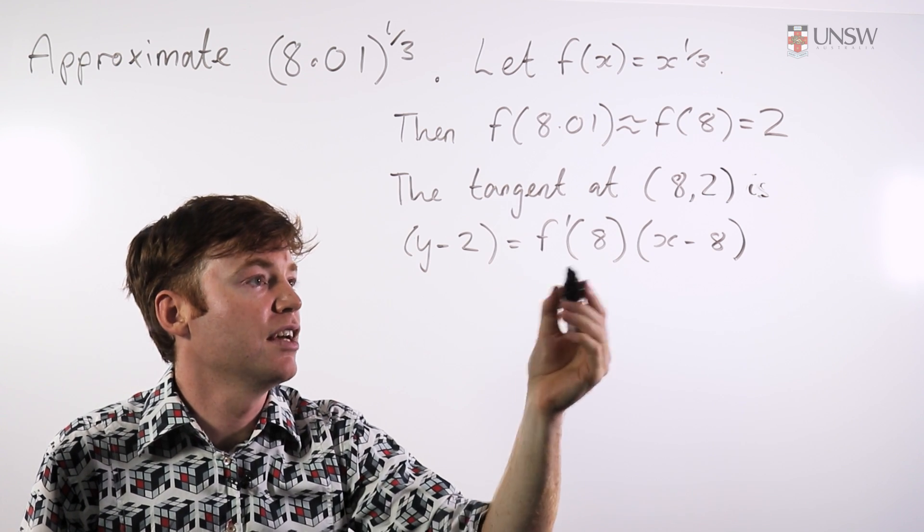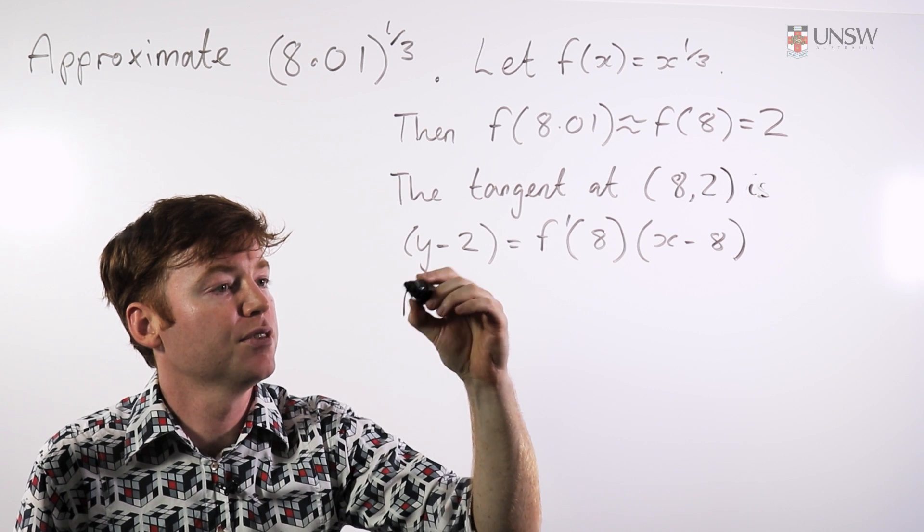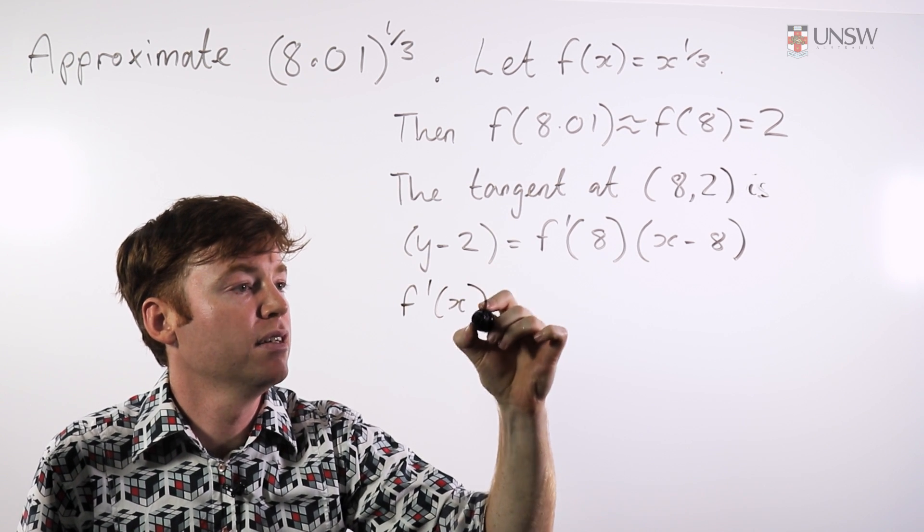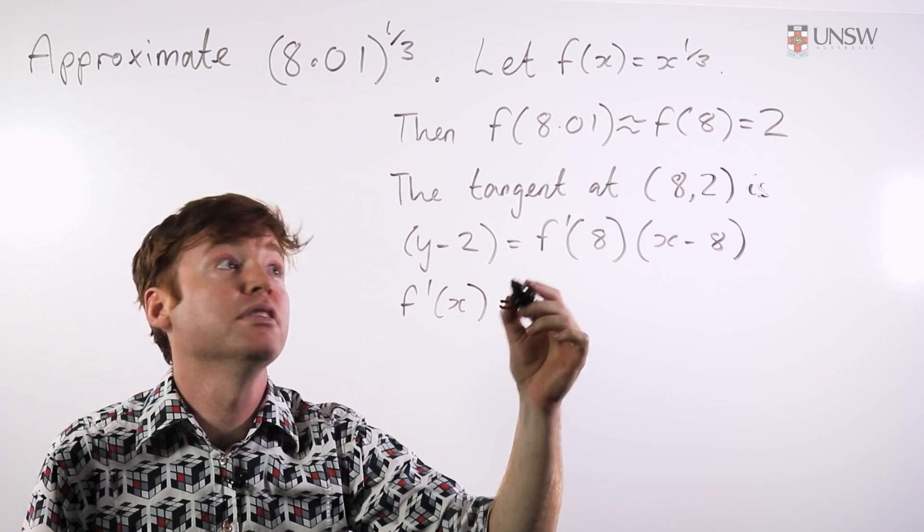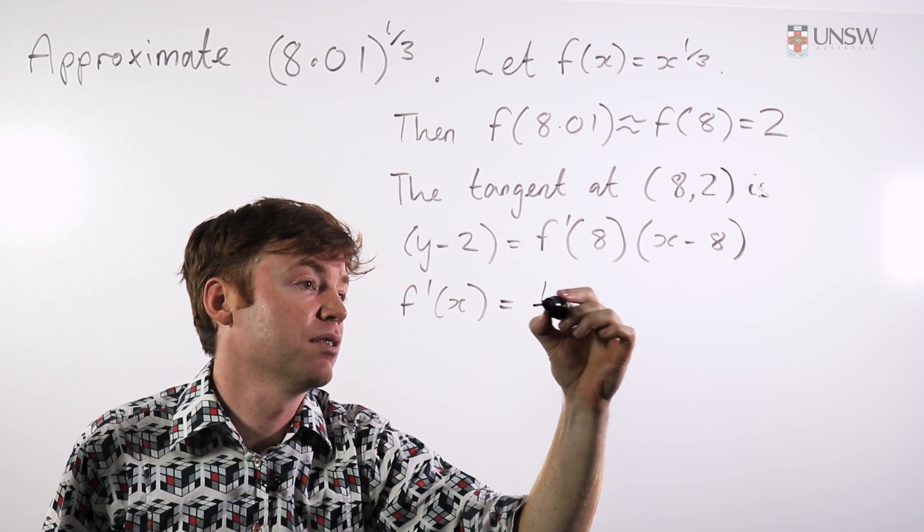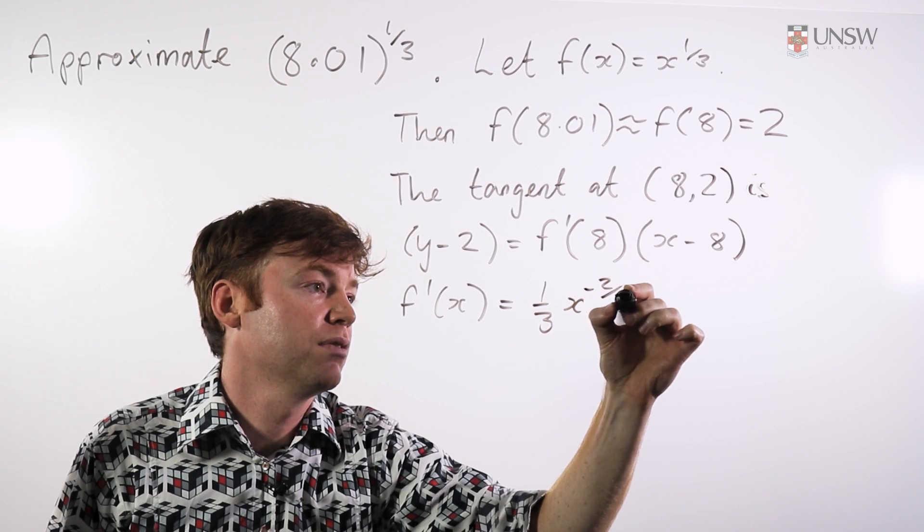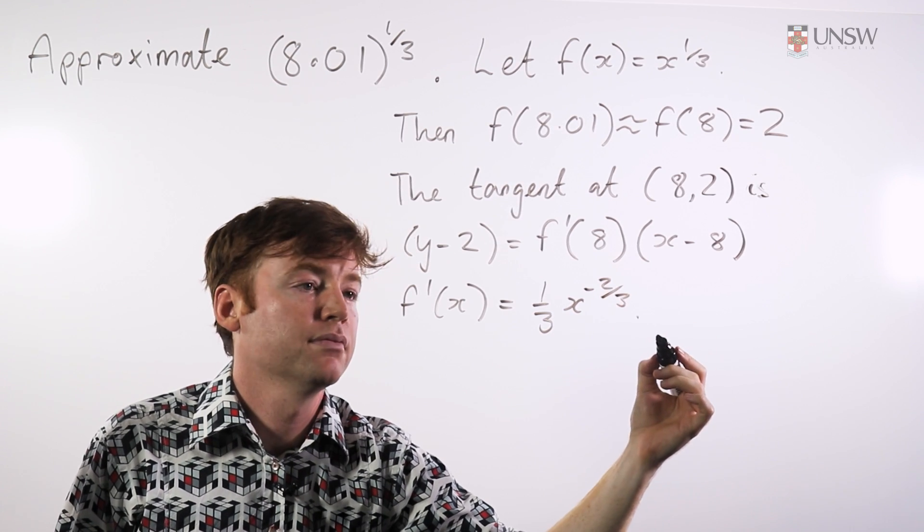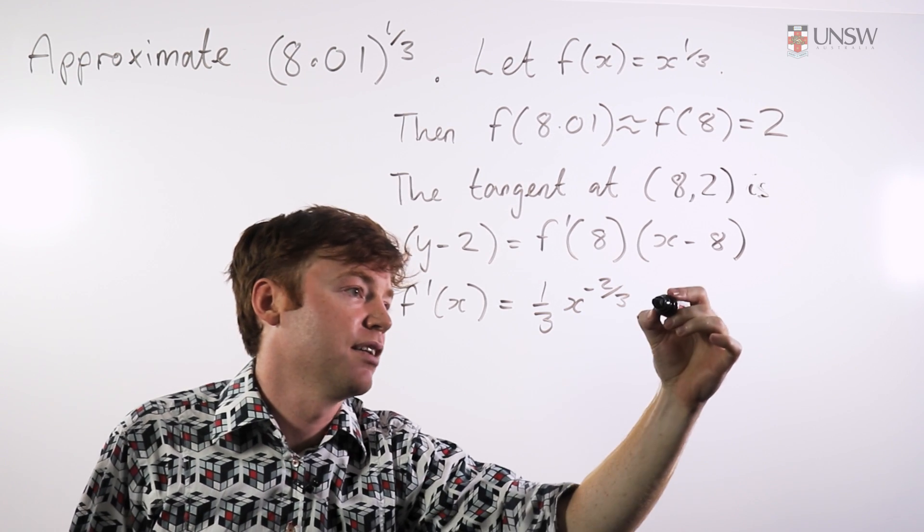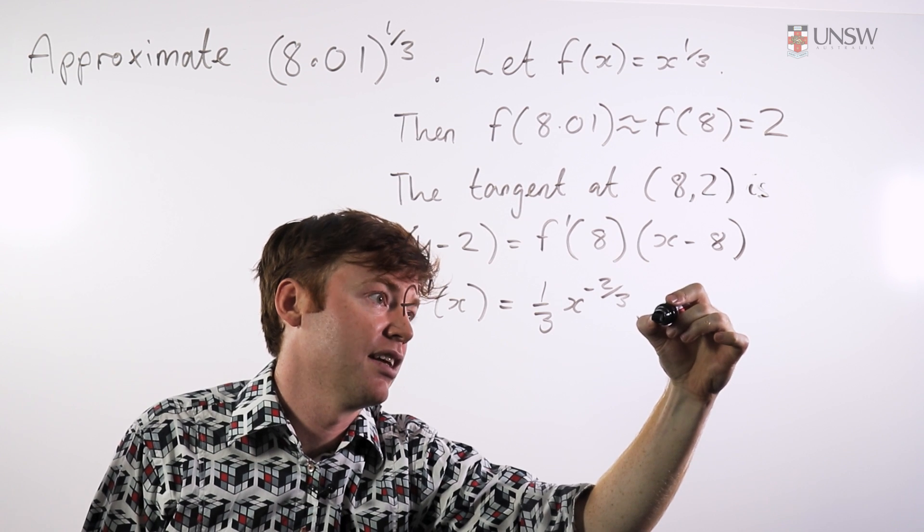So I just need to know what f prime of 8 is. So f prime of x is equal to d/dx of x to the one-third, so that's one-third x to the negative two-thirds. And I can evaluate this at f of 8, at x equals 8.